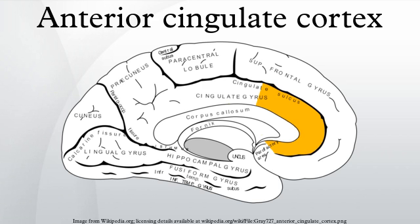The ACC seems to be especially involved when effort is needed to carry out a task, such as in early learning and problem-solving. On a cellular level, the ACC is unique in its abundance of specialized neurons called spindle cells. These cells are a relatively recent occurrence in evolutionary terms and contribute to this brain region's emphasis on addressing difficult problems, as well as the pathologies related to the ACC.